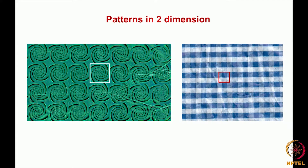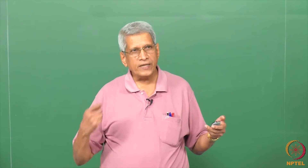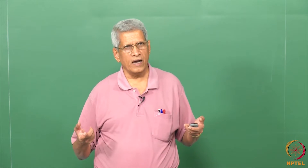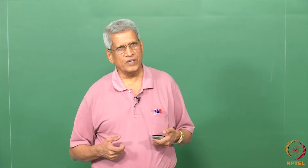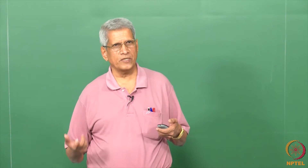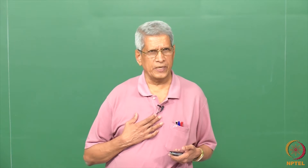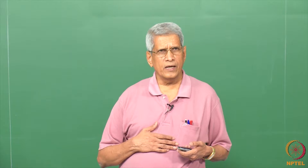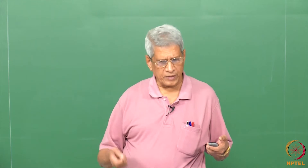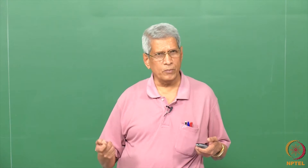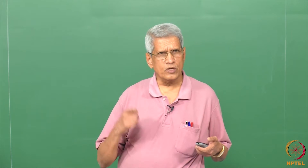In nature, even when we look at various types of designs, though the designs are different, what is getting repeated is often common. The question which arises is: is there any restriction on how many types of periodicity we can have in one, two, and three dimensions — that is the information we require. So suppose we have to represent this repeating pattern, how can we go about doing it? Because the pattern itself is an asymmetric, complicated design.